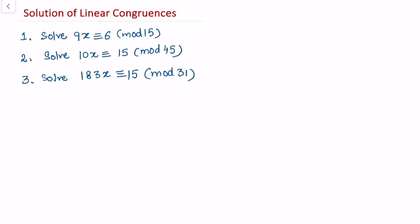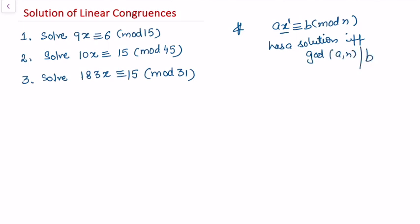In this video we take examples explaining the solution of linear congruences. A linear congruence is any congruence of the type ax ≡ b (mod n), where the variable x appears to power 1. This has a solution if and only if gcd(a, n) divides b. If d is that gcd, then the congruence has exactly d incongruent solutions.